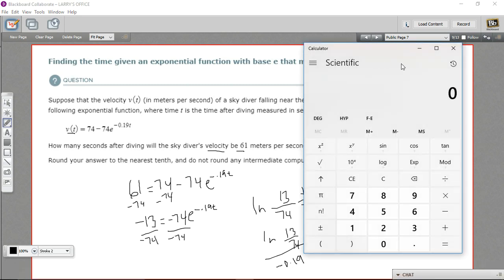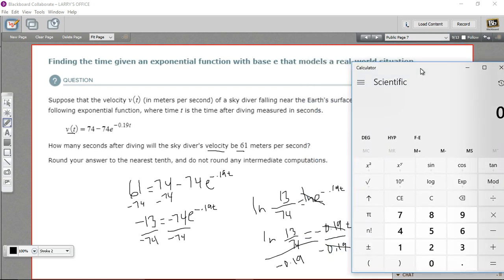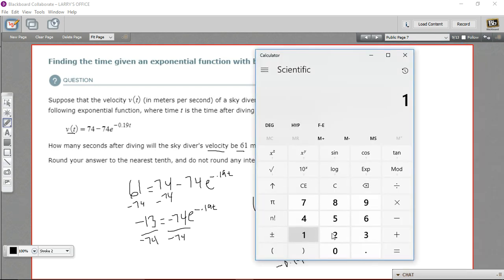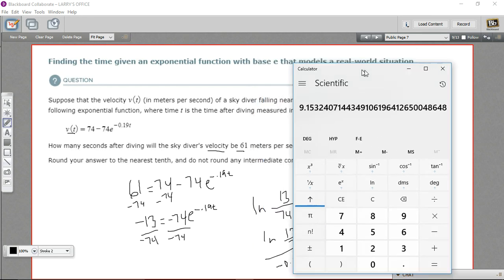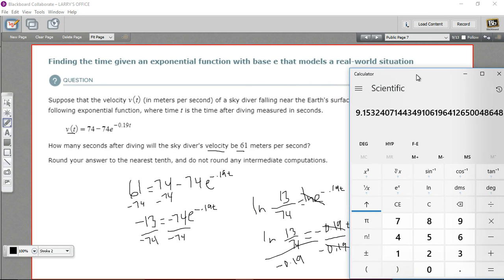So let's try 13 divided by 74. And we want to take the natural log. So I've got to press the second function here. We'll take that natural log. And then we're going to divide that by negative 0.19. And we get 9.15. We want to round to the nearest tenth.